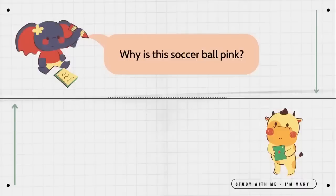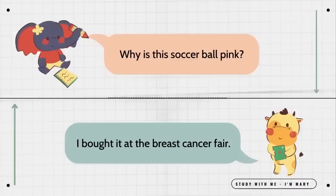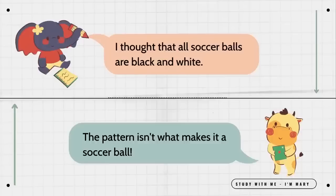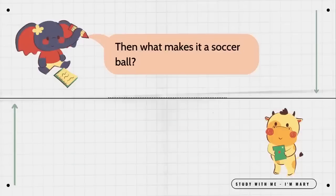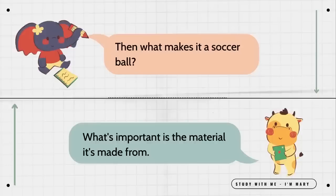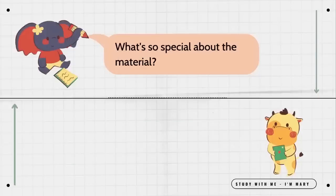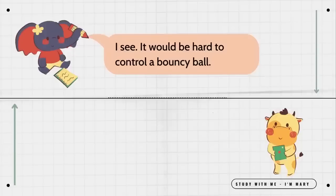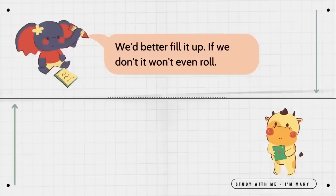Why is this soccer ball pink? I bought it at the breast cancer fair. I thought that all soccer balls are black and white. The pattern isn't what makes it a soccer ball. Then what makes it a soccer ball? What's important is the material it's made from. What's so special about the material? It allows the ball to bounce but not too much. I see. It would be hard to control a bouncy ball. My ball is a little flat though. We'd better fill it up. If we don't, it won't even roll. Have you seen the air pump?